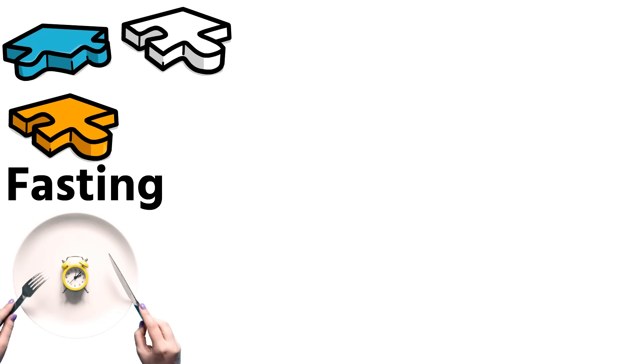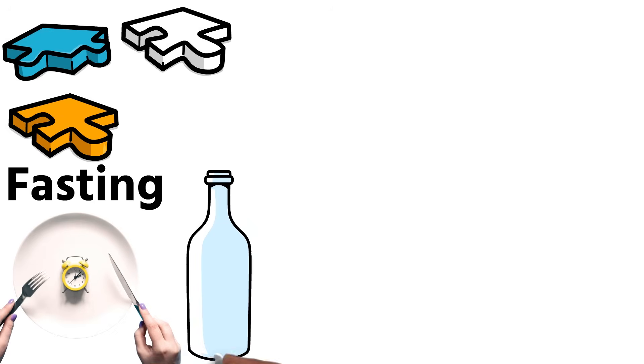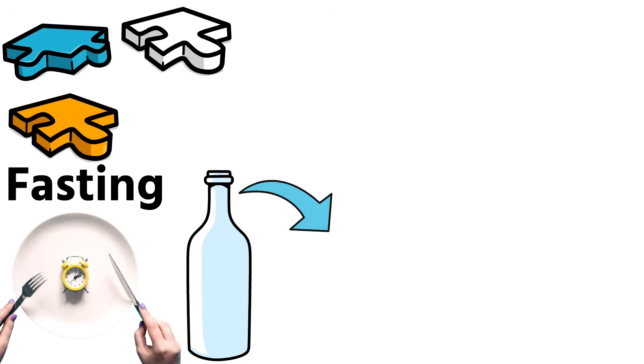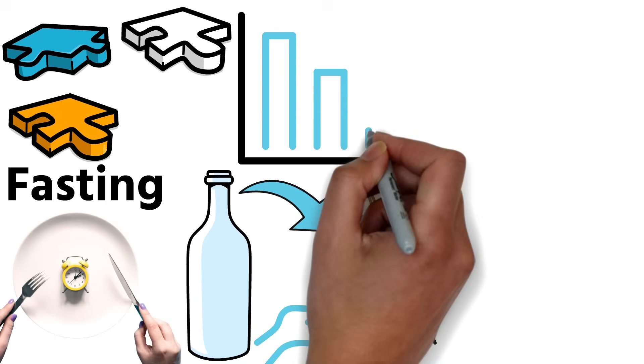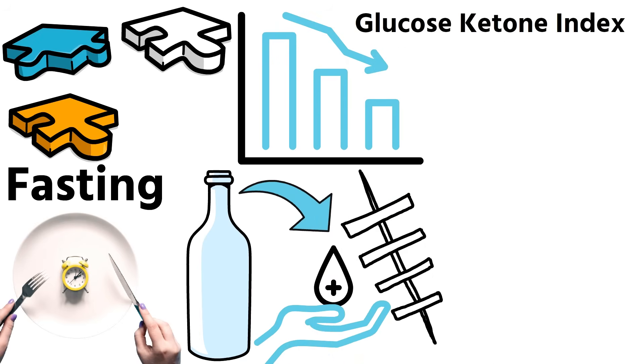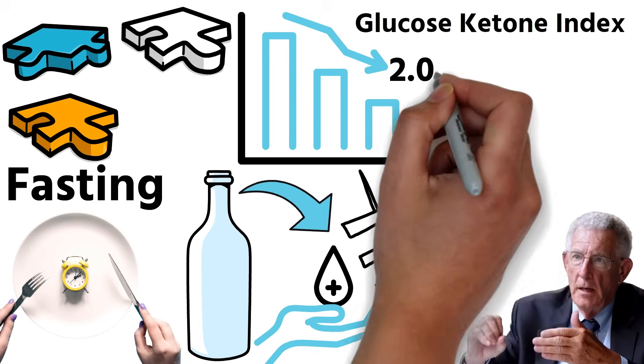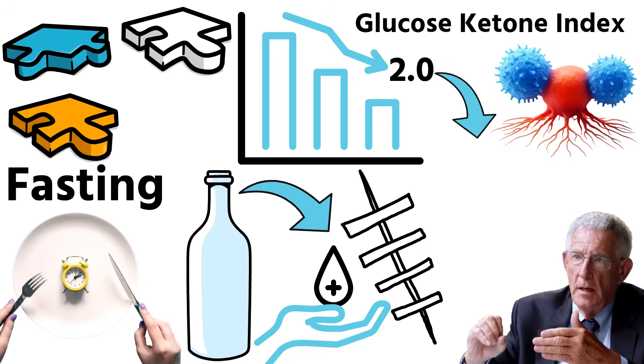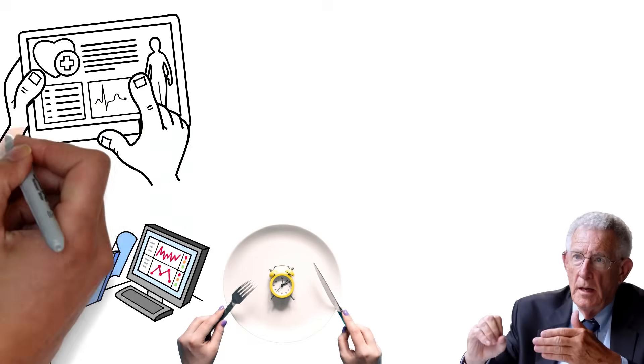The third piece of the puzzle is fasting. Whether it's intermittent fasting or occasional water fasting, both can trigger powerful healing and cleansing processes within the body. Fasting naturally lowers the glucose ketone index. And when that number drops below 2.0, Professor Seyfried explains, the body enters a state where cancer cells begin to die off. However, if you've already been diagnosed with cancer, fasting should never be attempted without professional medical supervision.